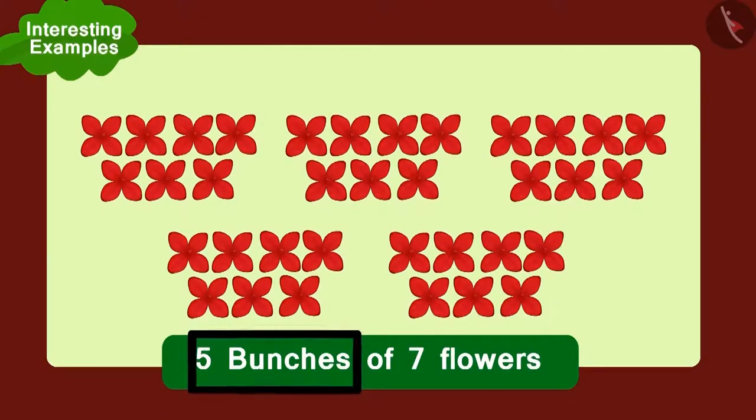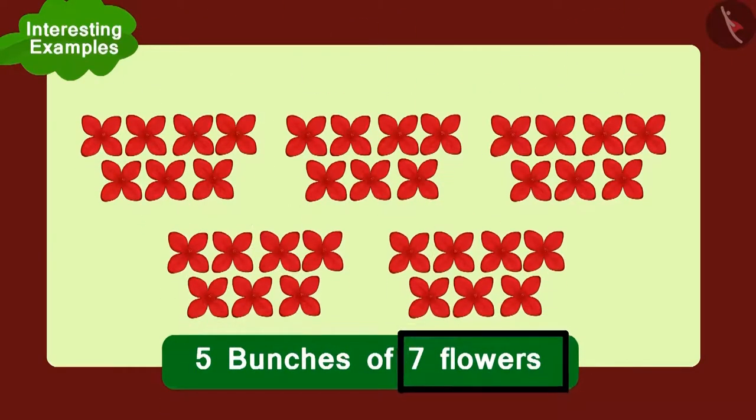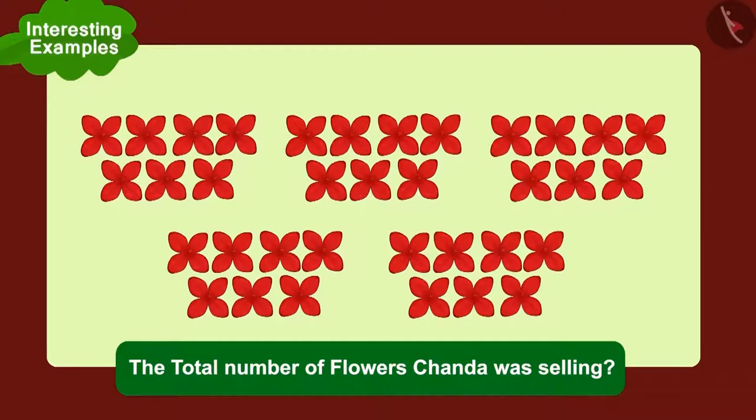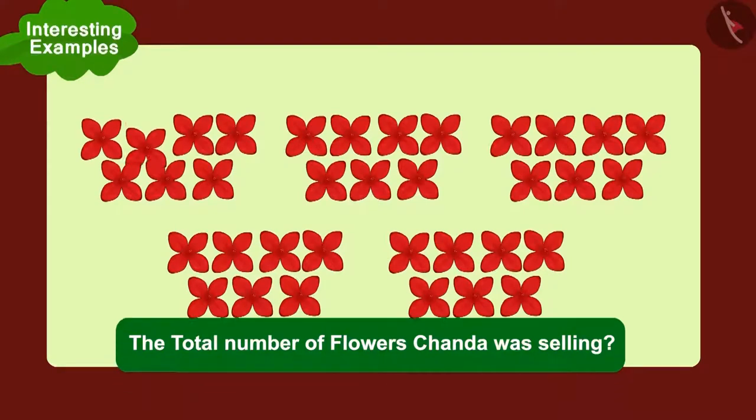At the same time, Chanda was selling five bunches of seven flowers each. Children, can you tell the total number of flowers Chanda was selling? Five times seven, or five multiplied with seven. We can write it like this.